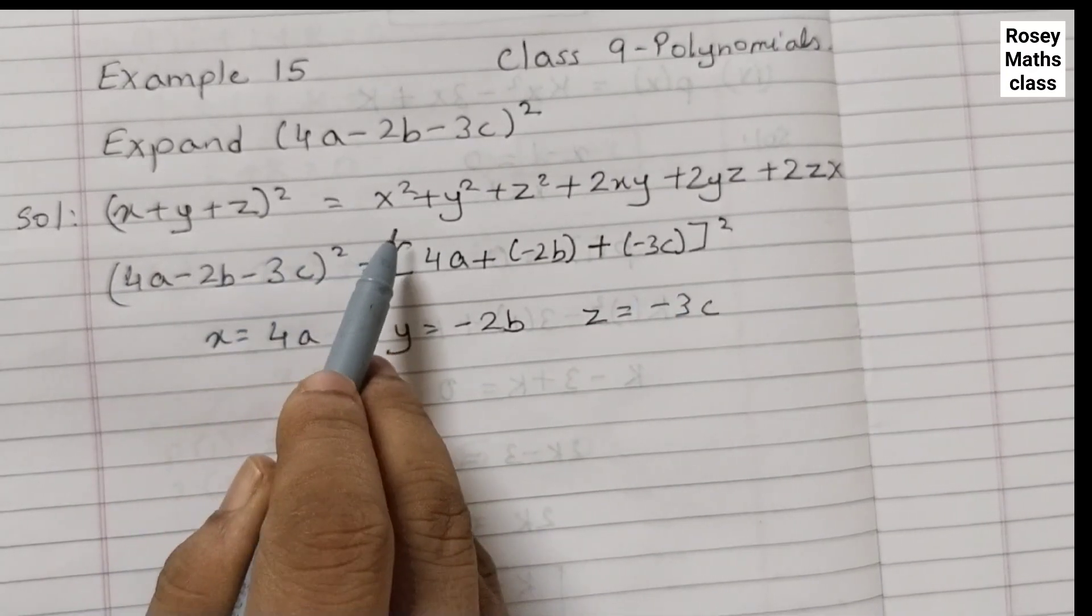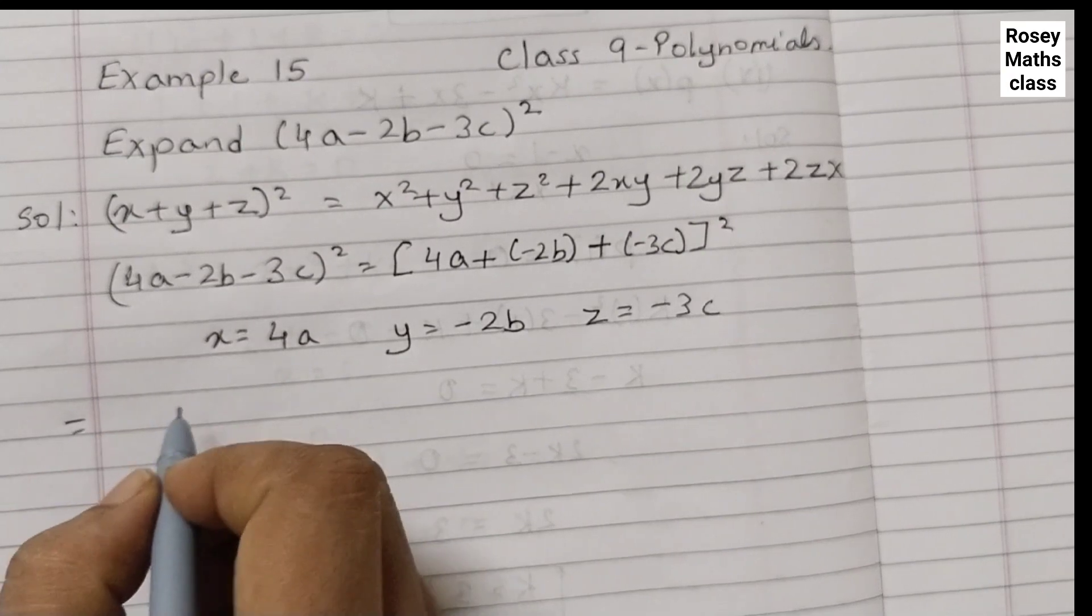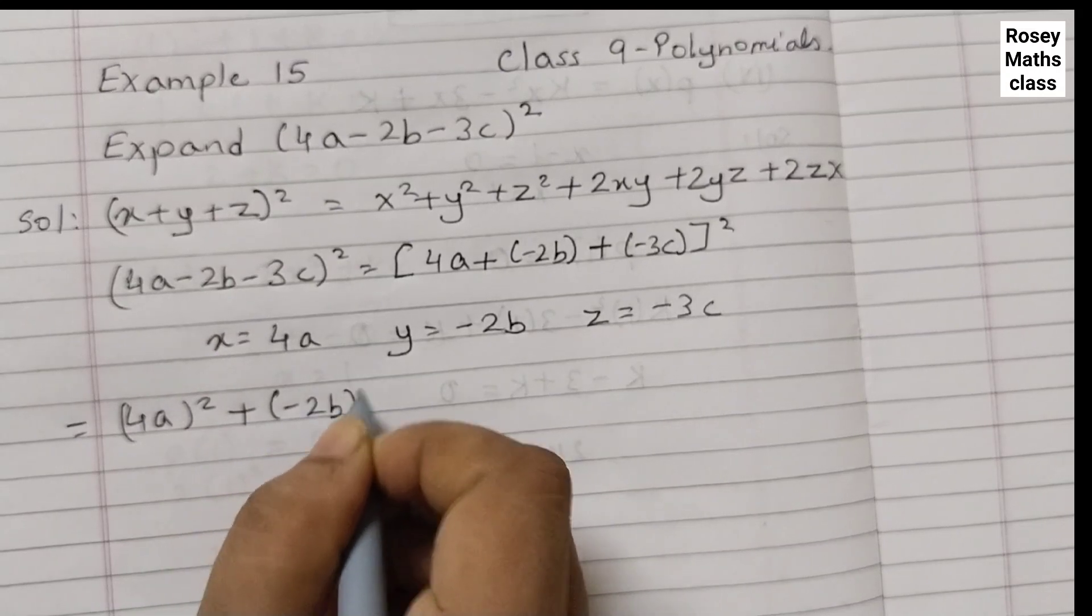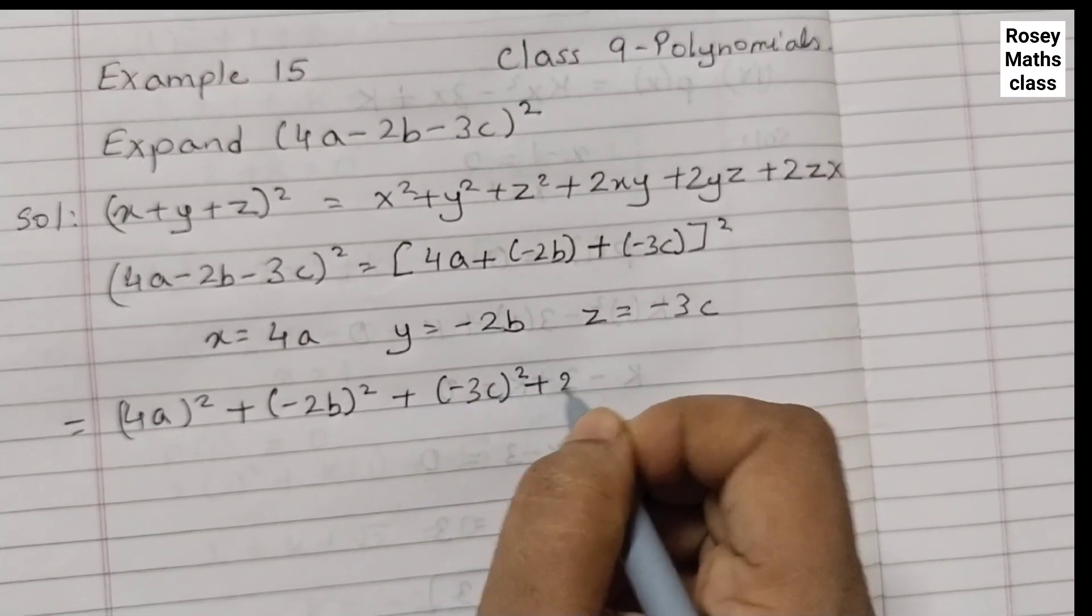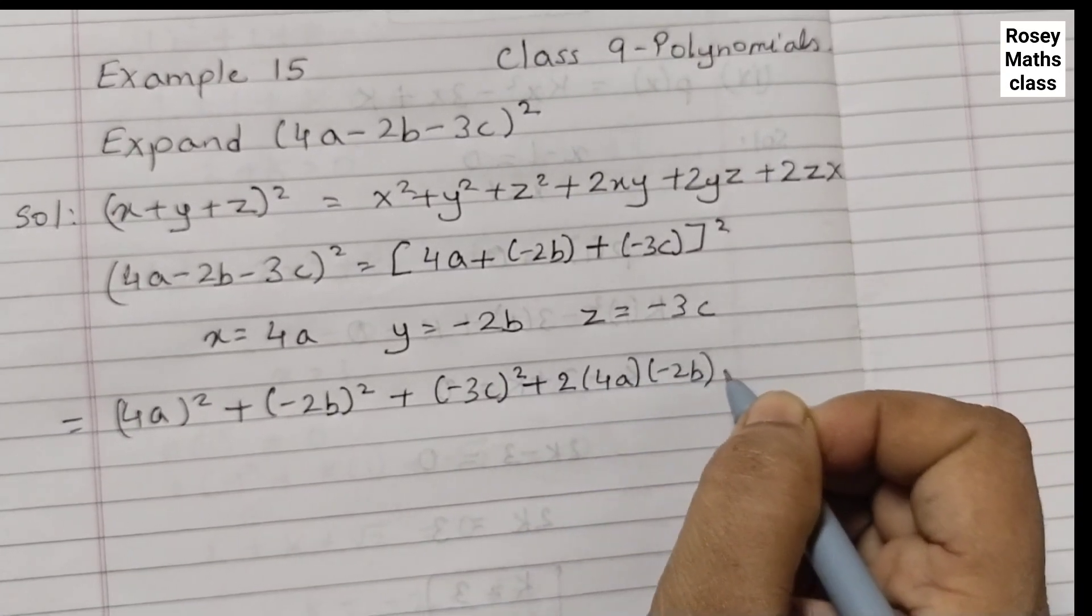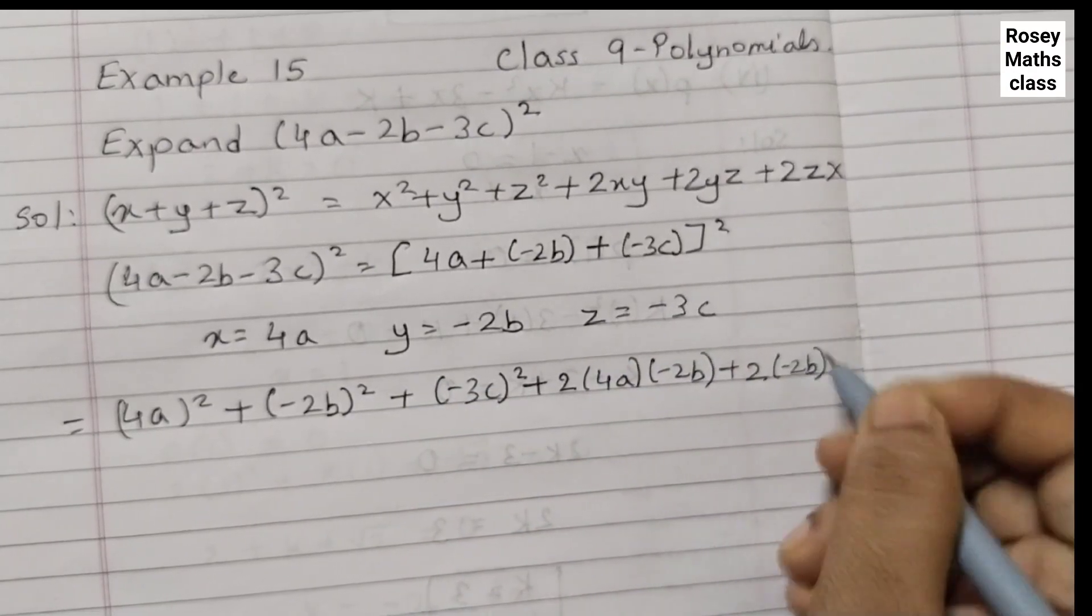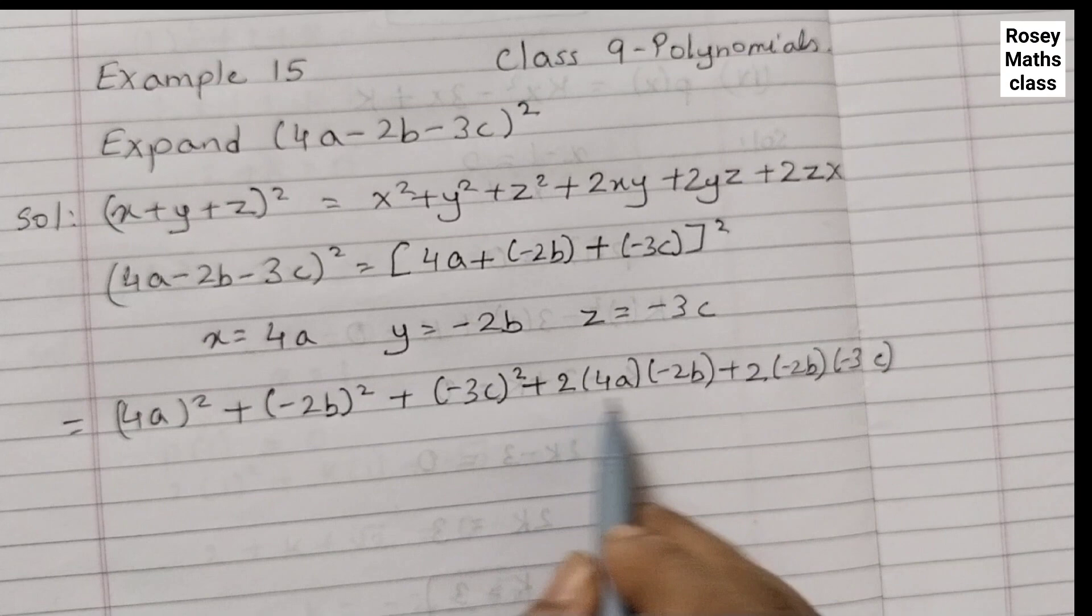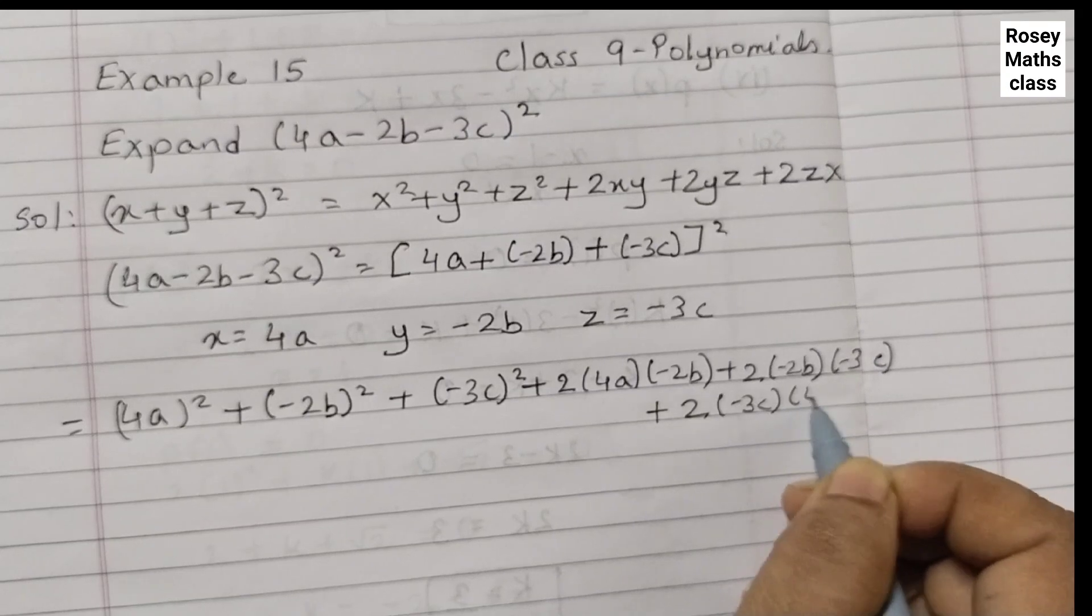So in this identity we are going to replace xyz by 4a minus 2b and minus 3c. That equals to 4a squared plus minus 2b squared plus minus 3c squared plus 2xy. We will simplify 4a into minus 2b plus 2yz minus 2b minus 3c. We are putting these brackets to show that we are multiplying these three. Plus 2 minus 3c 4a.